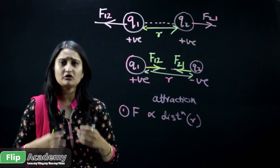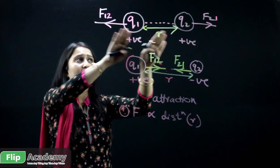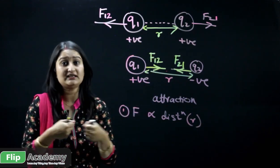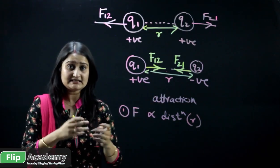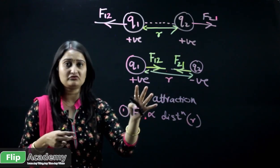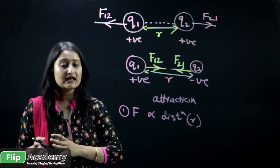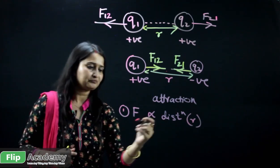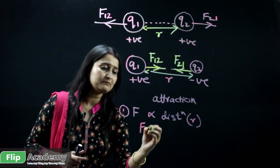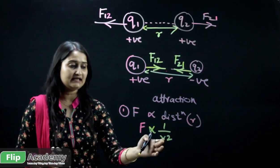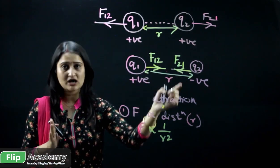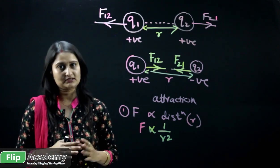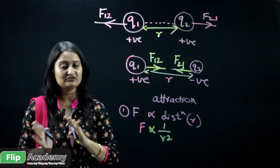If Q1 and Q2 come nearer to each other, the force increases. If the distance decreases, the force of repulsion increases. Likewise, if the distance decreases in the attraction case, the force of attraction also increases. So force is inversely proportional to distance. Coulomb stated that force is inversely proportional to 1/r². If the distance of separation between the two charges increases by a square factor, then the force reduces.